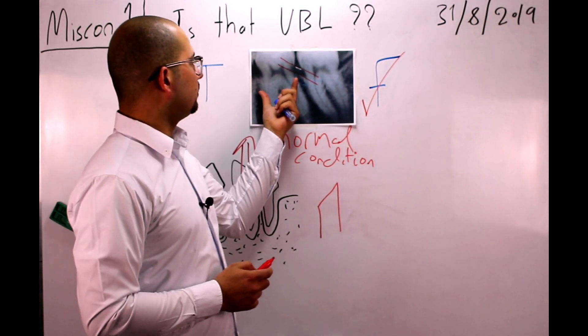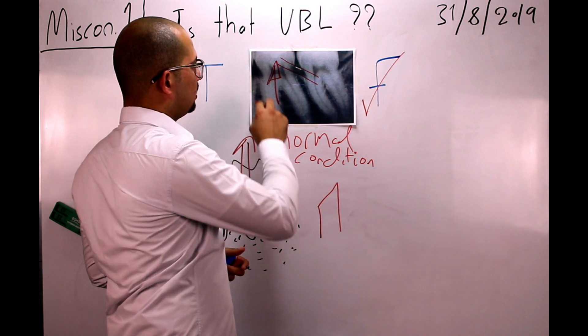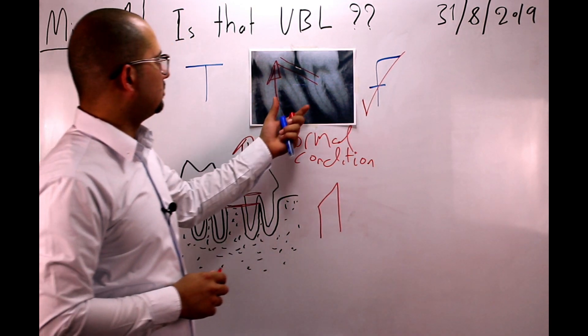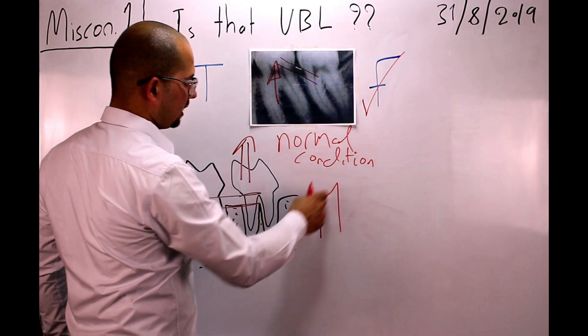The over-eruption of this tooth makes the alveolar bone like that.